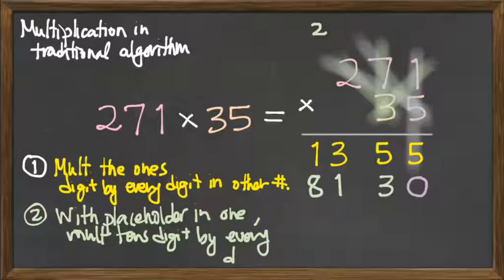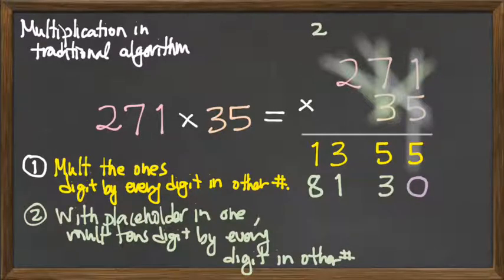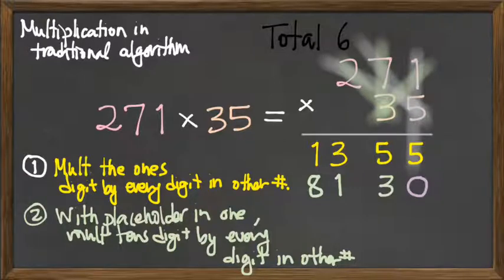So how many total multiplications did I do in this problem? I had to multiply the five by each of these three digits. I had to multiply the three by each of those digits. How many products, how many multiplications did I carry out? Six of them.